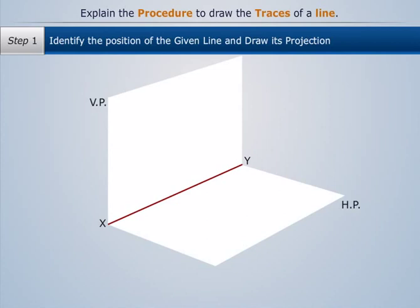In the first step, we identify the position of the given line and draw its projection. Let's assume that a line, say AB, is inclined to HP and VP.